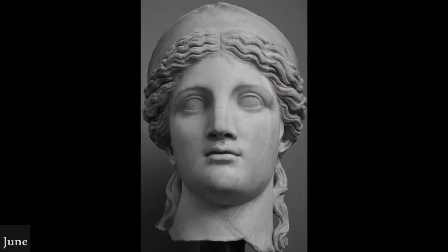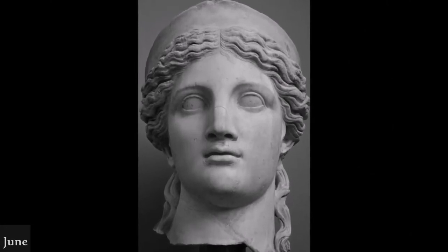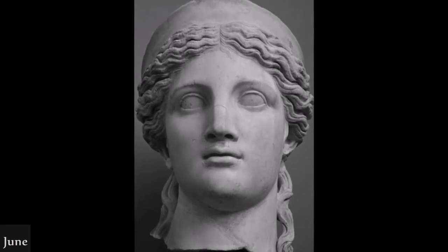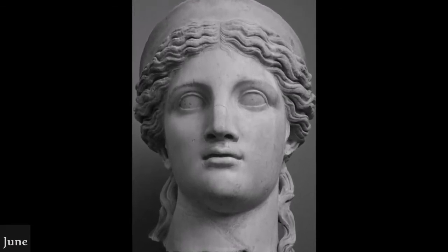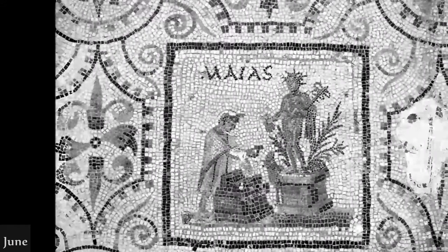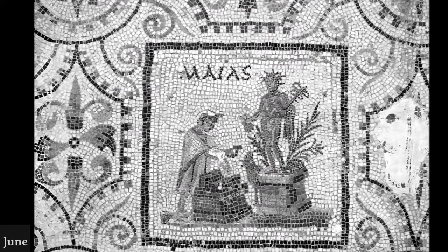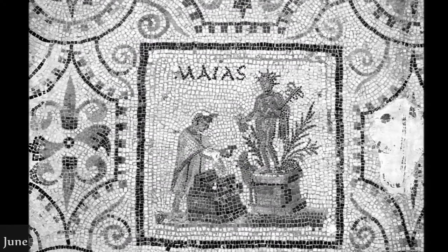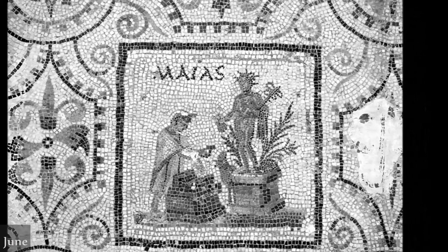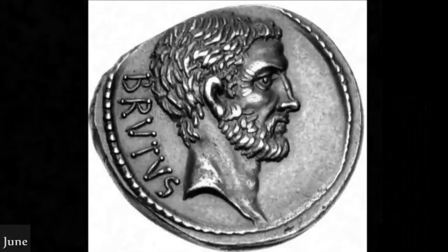June offers multiple etymologies in the Roman calendar. The first is that the month is named after the Roman goddess Juno, the goddess of marriage and the wife of the supreme deity Jupiter. The second is that the name comes from the Latin word iuniores, meaning younger ones, as opposed to maiores, meaning elders, for which the preceding month, May, may be named. Another source claims June is named after Lucius Junius Brutus, founder of the Roman Republic.